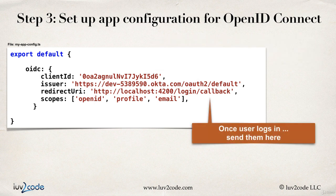For the redirect URI, this is the actual callback. Once a user logs in successfully, Okta will send them to this given endpoint. In our application, it's localhost:4200 slash login slash callback. We'll see more coding later that ties these items together.